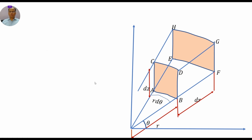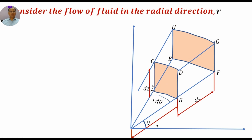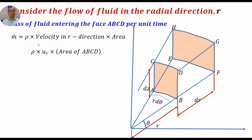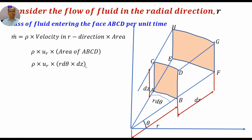Now we will find the rate of mass flowing into face abcd. Mass of fluid entering face abcd per unit time is: ṁ = ρ × velocity in r-direction × area. So ṁ = ρ · ur · r·dθ · dz. This is the mass in, in the radial direction through face abcd.